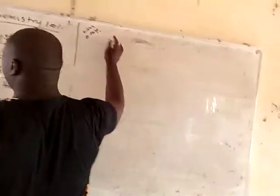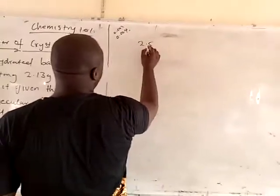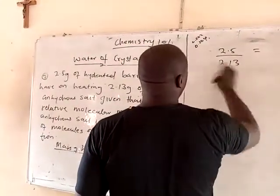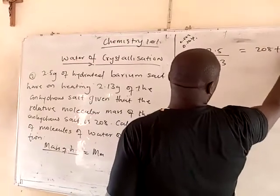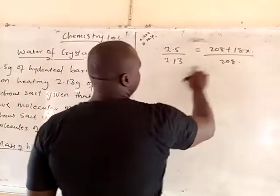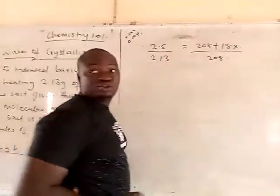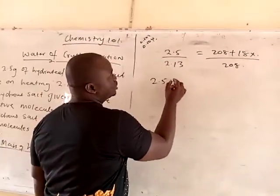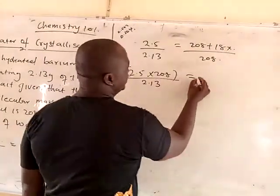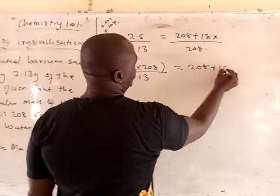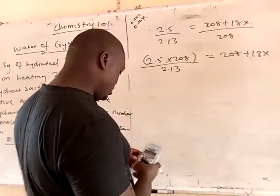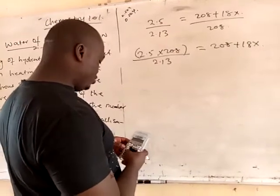Setting up the formula: mass of the hydrated is 2.5, divided by mass of the anhydrous, which is 2.13, equals the molar mass of the hydrated — which is 208 plus 18x — divided by 208. Cross-multiplying: 2.5 times 208 divided by 2.13 equals 208 plus 18x.